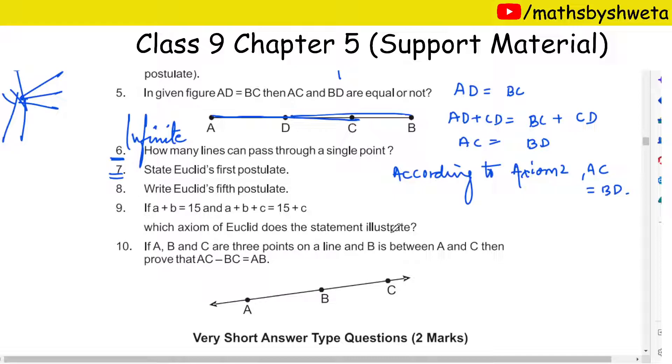If a + b = 15 and a + b + c = 15 + c, which axiom of Euclid does the statement illustrate? So take a look - left hand side, c is added, and right hand side, c is added. If you add equal to equal, then it will be equal. Clear?